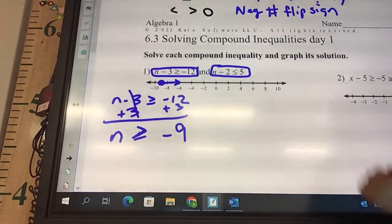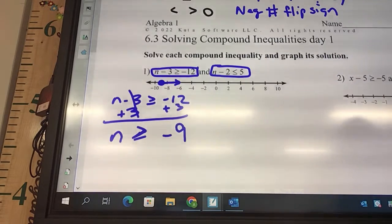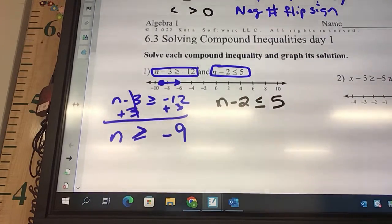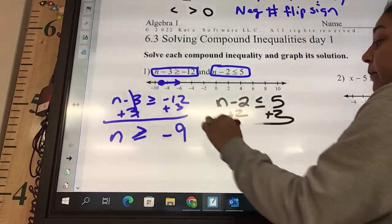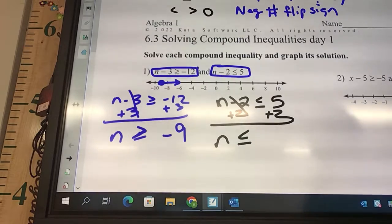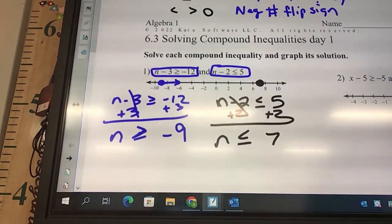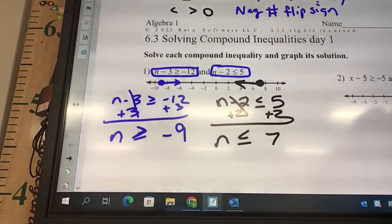Now, if we're solving the second one, n-2≤5, what do I need to do to solve for n? Add 2. So 5 plus 2 is 7. Is the 7 going to be open or closed? Closed. And this says n is less than, so which way is it going to go? To the left. So this one's going to be going this way.